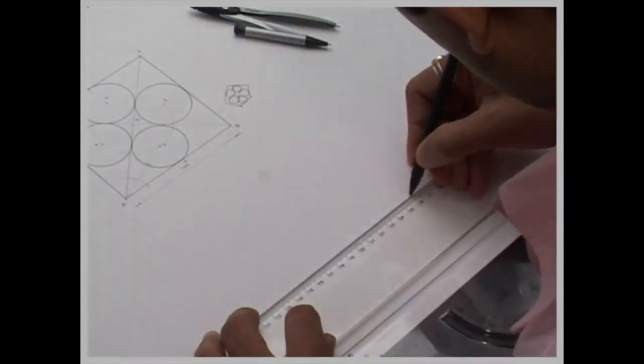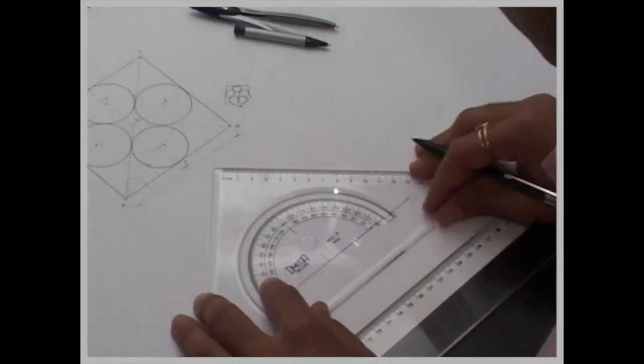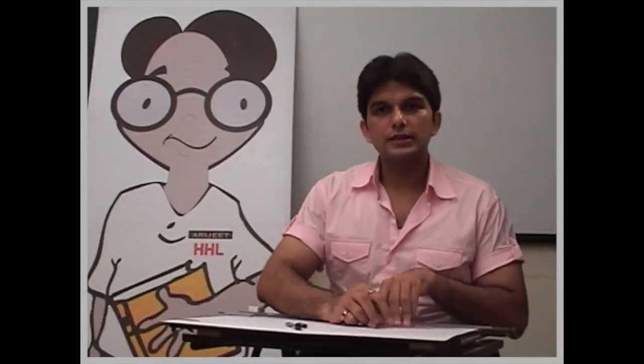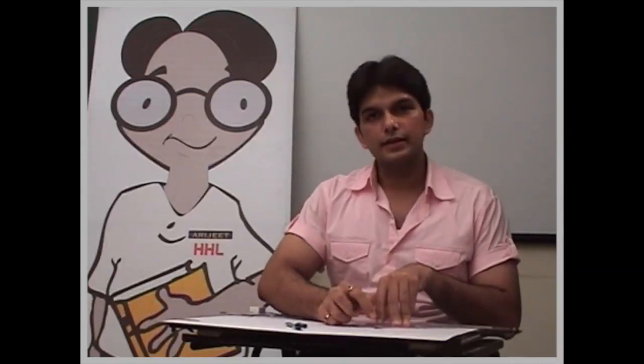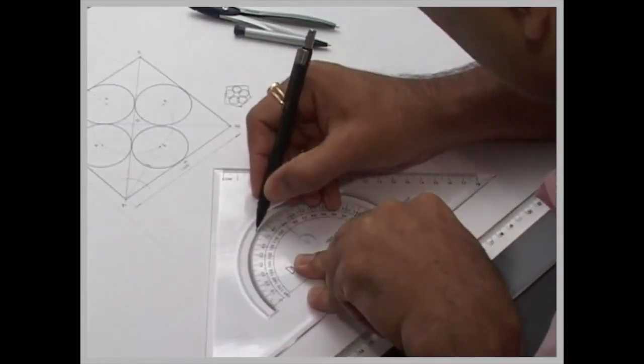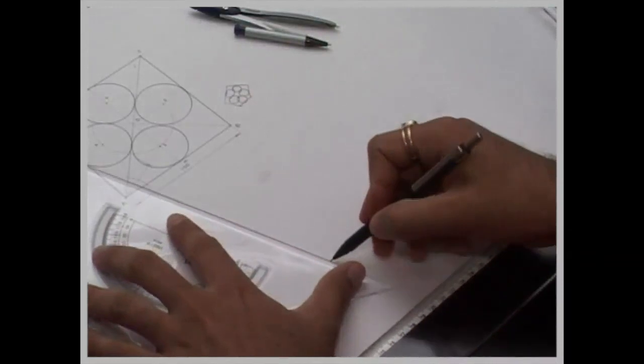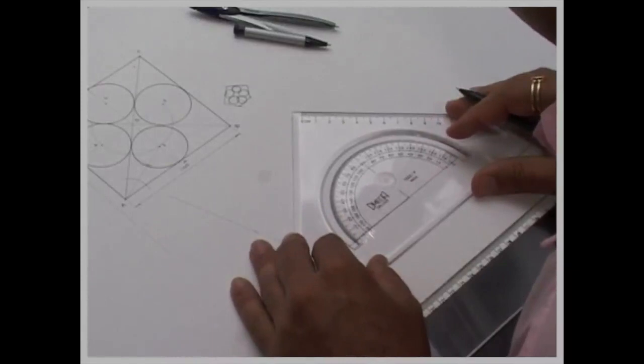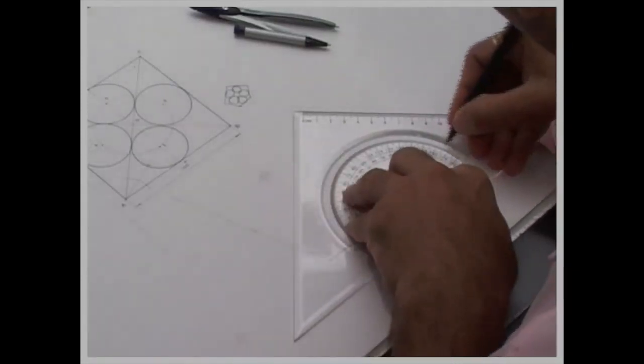And that we will take a side, then we will take 72 degree. Now always remember whenever you take 72 degree, what is the common error people do is instead of 72, they either take 68 or 78. So now always remember whenever you are taking, always mark properly 70 then 1 and 2. 72, 72 and you draw a line, right line. Same way you take it on the other side. Again you take 0, 1, 2, 3.